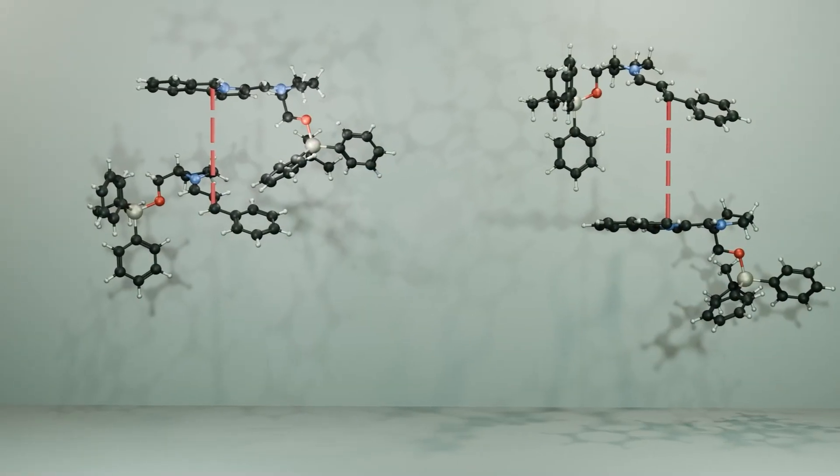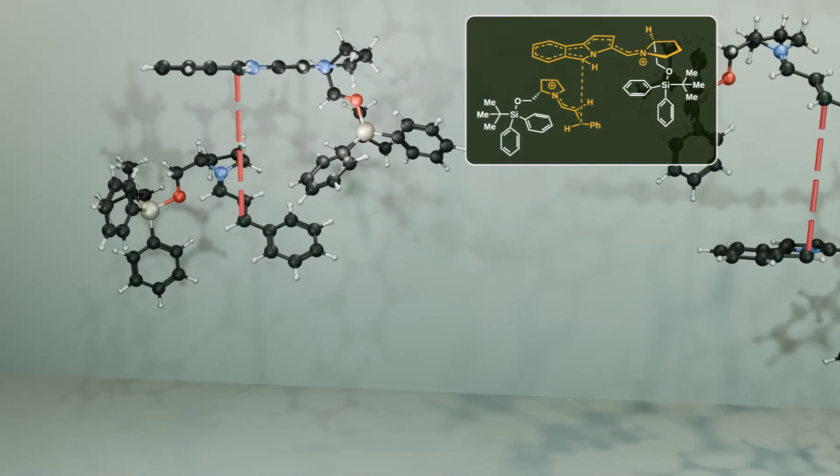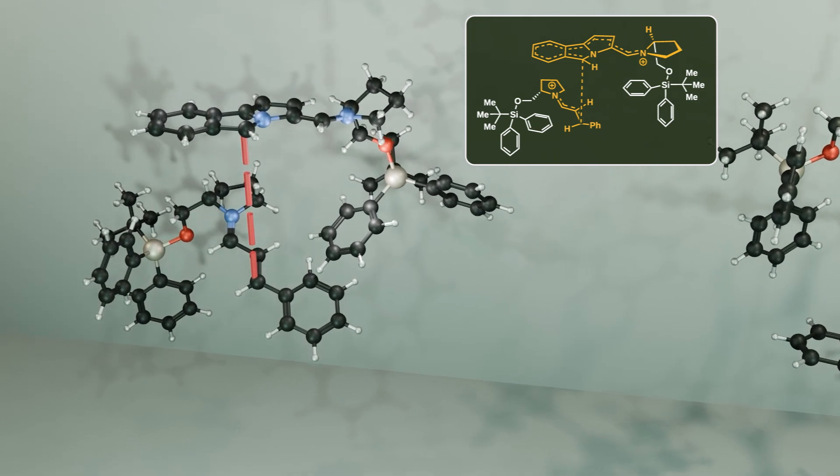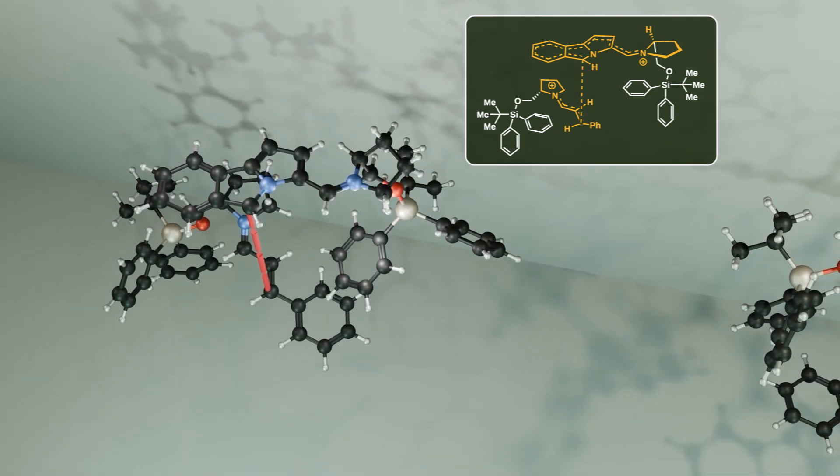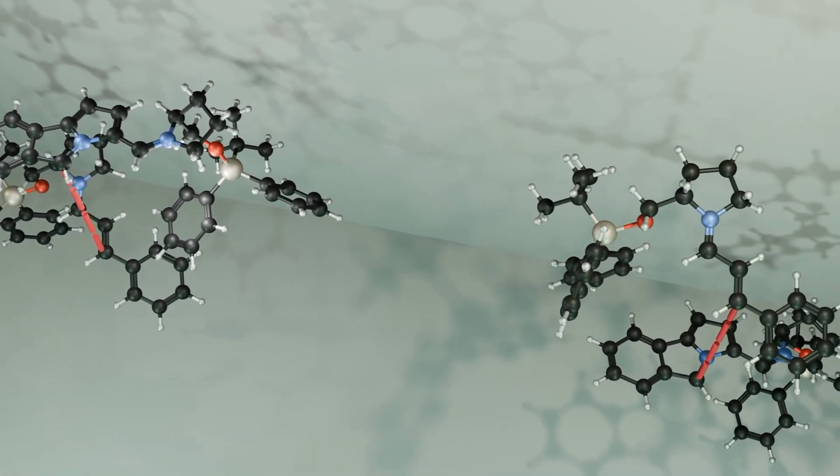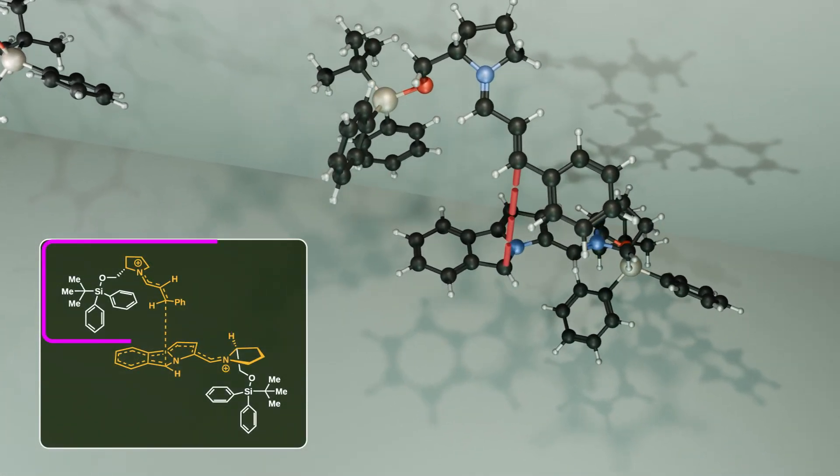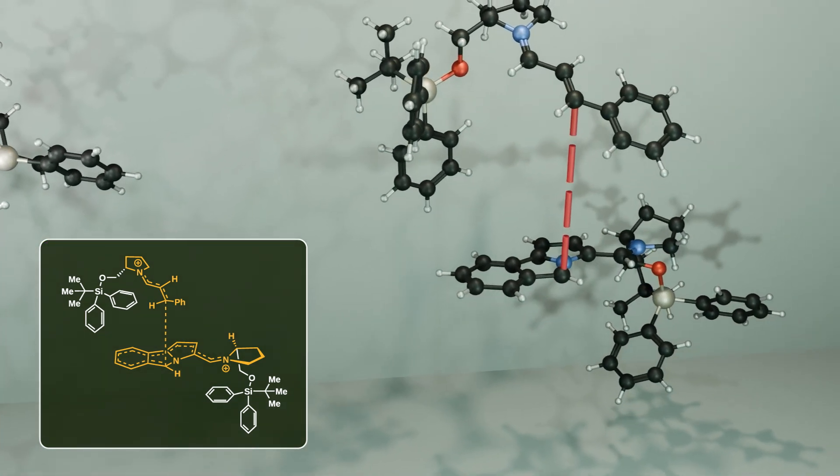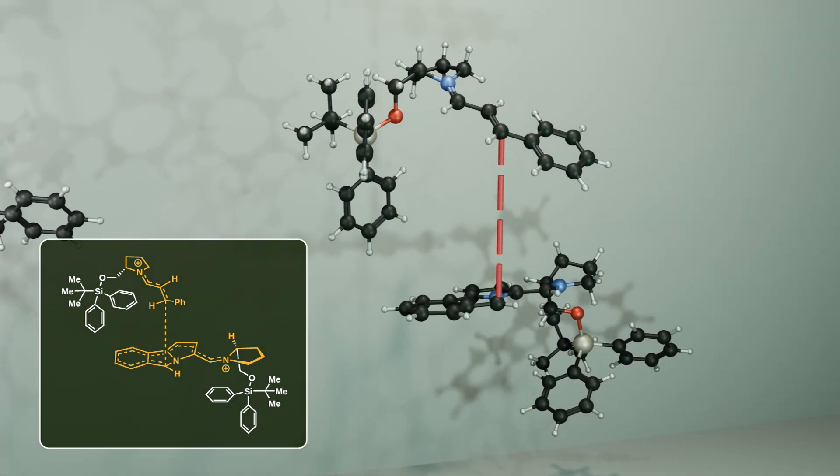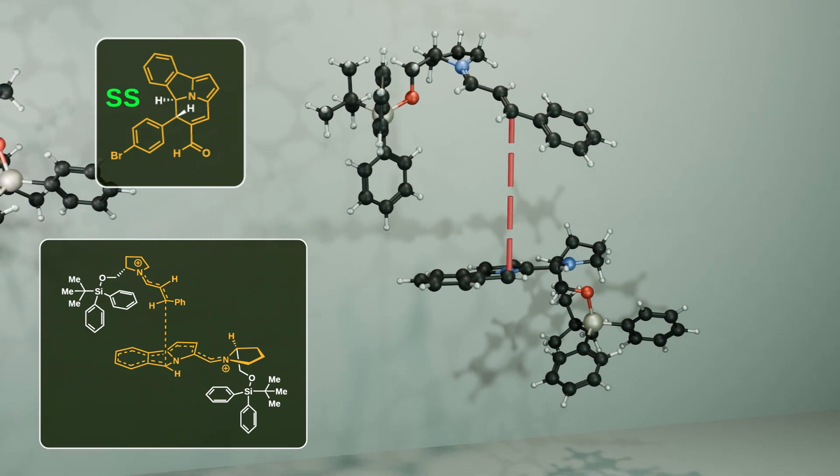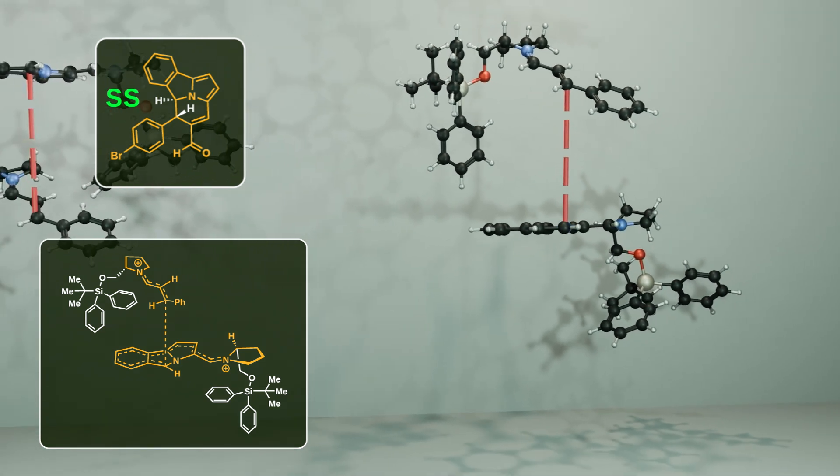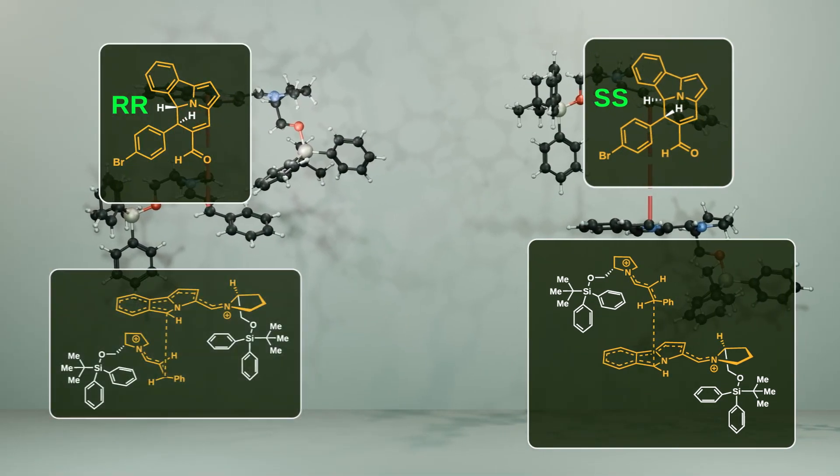Now let's explore the first step of the cyclization process. On the left side, the transition state shows that the 12π component attacks the upper face of the 2π component. On the right side, the situation is reversed with the nucleophile attacking the lower face of the 2π component. Calculations indicate that this transition state is more stable, resulting in an SS configuration in the final product. However, this result contradicts the experimental outcome where the RR configuration is the major product. This suggests that another factor must be influencing the reaction pathway.